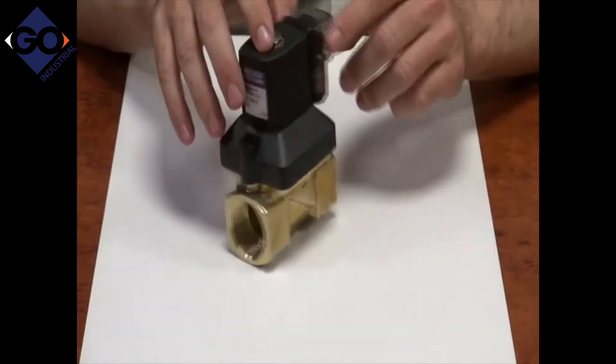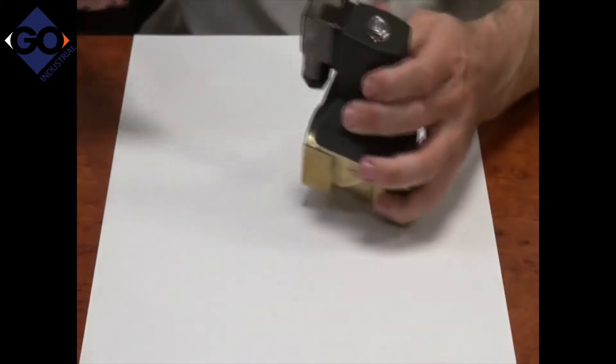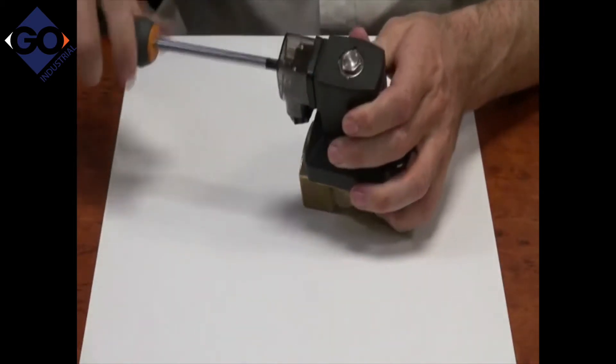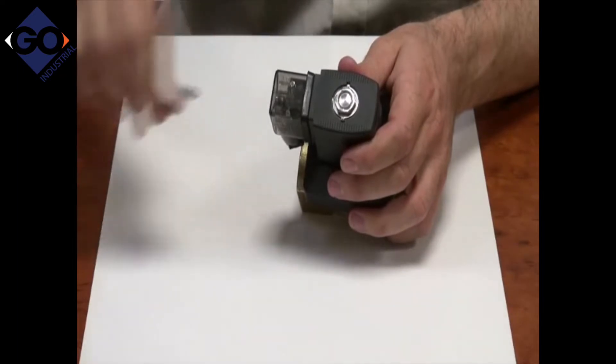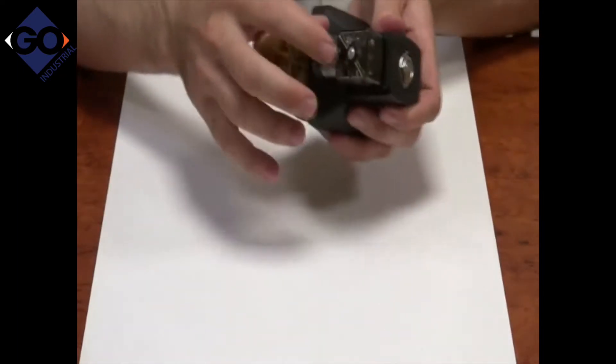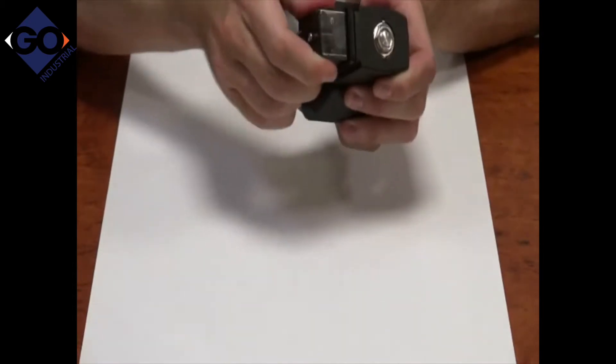Now let's have a look inside this valve. First, I'm going to take the DIN plug off. Just loosen the screw at the back here and pull it off.